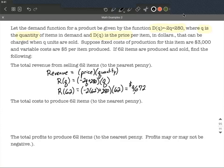Next, our cost function. Our cost function can come in two parts: it can be our variable costs and our fixed costs. Let's continue reading through here. They say we have fixed costs of production for this item are $3,000, so I'm going to fill that in for my fixed costs. We're also told that our variable costs are $5 per item, so that's going to be $5 for each item that we produce: 5 multiplied by q. I'm going to use c of q to represent our cost.